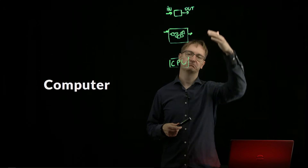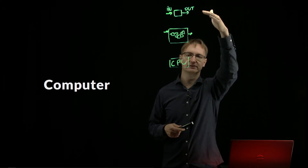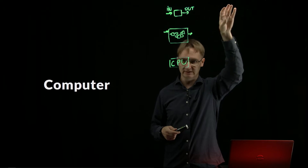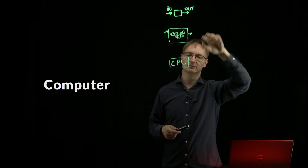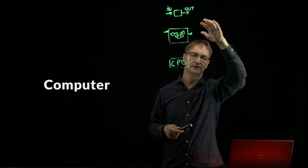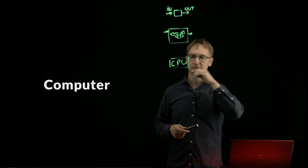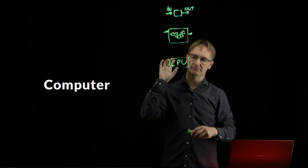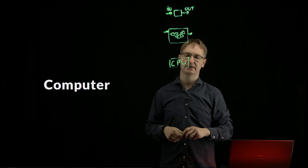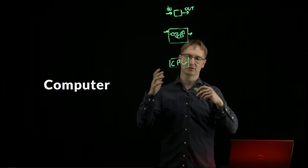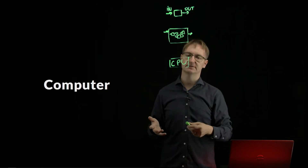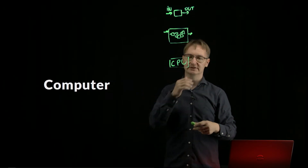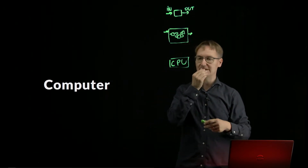If we take a program, the CPU starts from the beginning and goes through it line by line — first line is executed, then the second, and so on. During the same time you may have different other applications running: the operating system, Excel, Word, a browser, games, and so on.